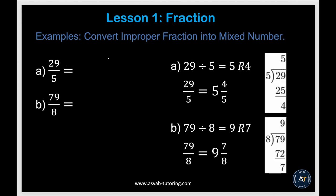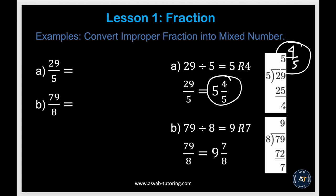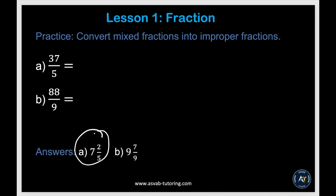Next, we'll learn how to convert an improper fraction into a mixed number. Whenever you see an improper fraction in a problem, turn it into a mixed number. Simply divide: 29 divided by 5 — 5 goes into 29 five times (5 times 5 is 25), leaving a remainder of 4, so you get 5 and 4 over 5. Similarly, 79 divided by 8 gives 9 with remainder 7, so that's 9 and 7 over 8. Try the practice problems and make sure you get the right answers.